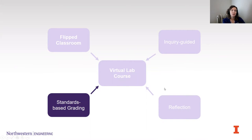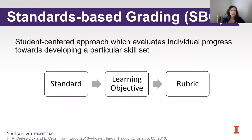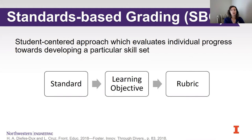Now I want to talk about how we evaluated students using a non-traditional assessment called standards-based grading. This is a student-centered approach that evaluates students' progress toward developing a particular skill set. You first create a standard — a lofty educational goal — and learning objectives fall out from that standard describing what you want students to be able to do. When evaluating students, you look for evidence they have learned those objectives through your rubric design.